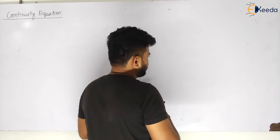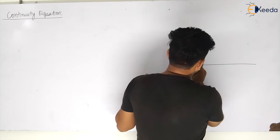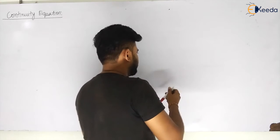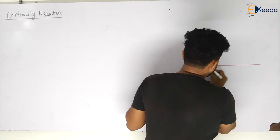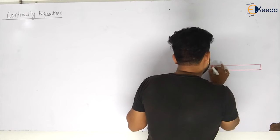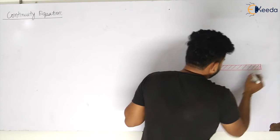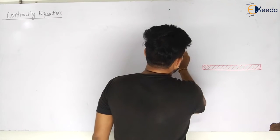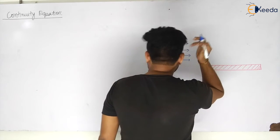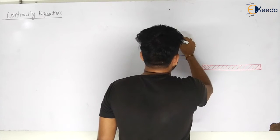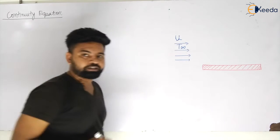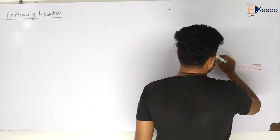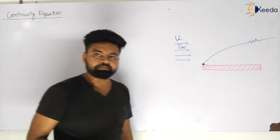Let us consider a plate — let us take the plate to be hot. This is your plate, and some fluid is coming from this direction over the plate. Let us say some cold fluid is coming from this side, having some inlet velocity u∞ and temperature T∞. As soon as this fluid touches the plate, it sticks to the surface and a boundary layer forms.